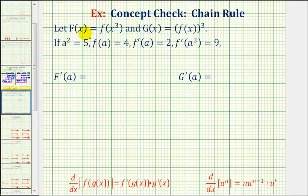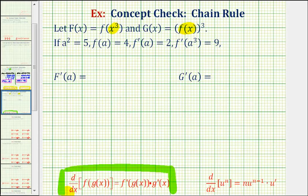The first thing we should recognize is that big F and big G are both composite functions, where for big F, X cubed is the inner function, and for big G, F of X is the inner function. Since they're both composite functions, we'll have to apply the chain rule in order to find their derivatives. The chain rule tells us to find the derivative of the outer function evaluated at the inner function, then multiply by the derivative of the inner function, where F is the outer function and G is the inner function.